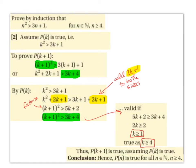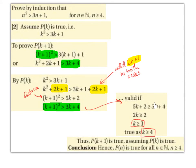We stated above that (k+1)² > 3k+4. Since both sides equal (k+1)², we equate: 5k+2 ≥ 3k+4. Simplifying: 2k ≥ 2, so k ≥ 1. This is true as k ≥ 4.